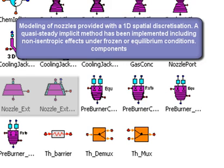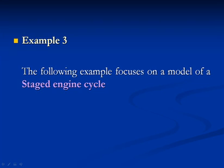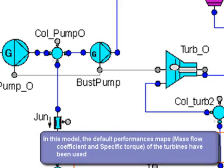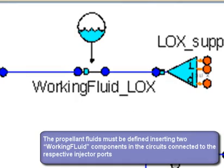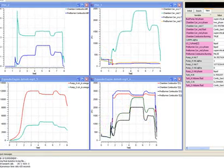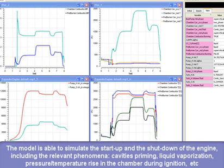A quasi-steady implicit method has been used, including non-isentropic effects under frozen or equilibrium conditions. Example 3: The following example focuses on a model of a staged engine cycle. The aim is to show ESPSS capabilities regarding this type of engine. This model uses maps of the default performances of the turbines. The propellant fluids must be defined by inserting two working fluid components in the circuits connected to the respective injector ports. The model is able to simulate the start-up and shutdown of the engine, including relevant phenomena such as cavity priming, liquid vaporization, and pressure-temperature rise in the chamber during ignition.